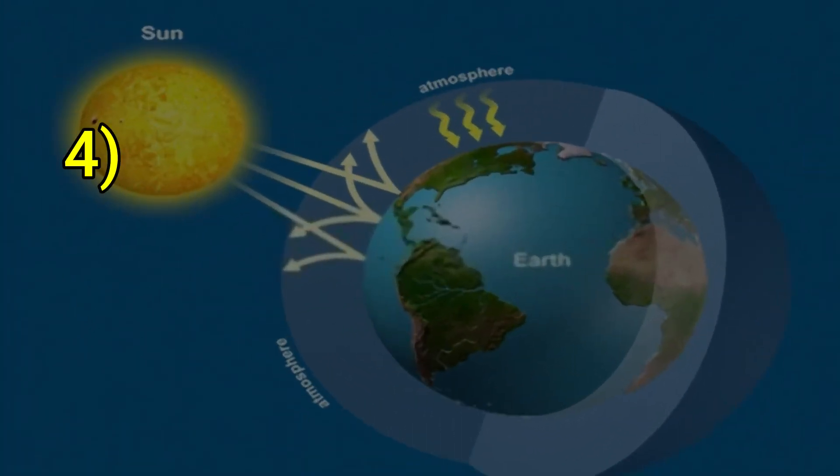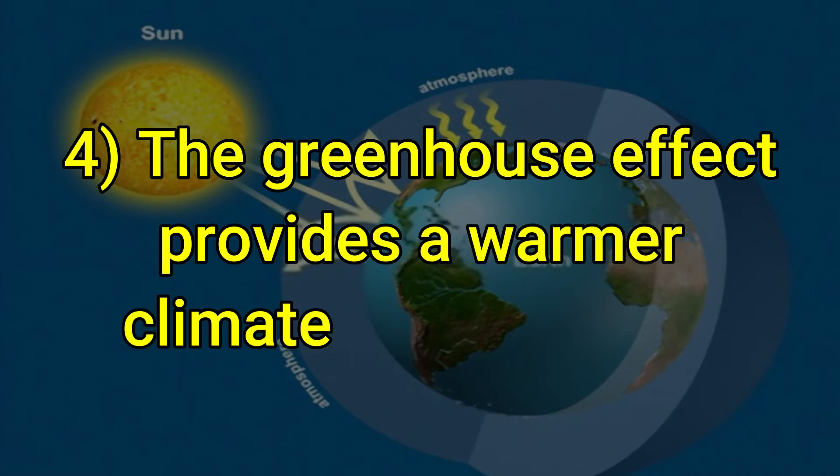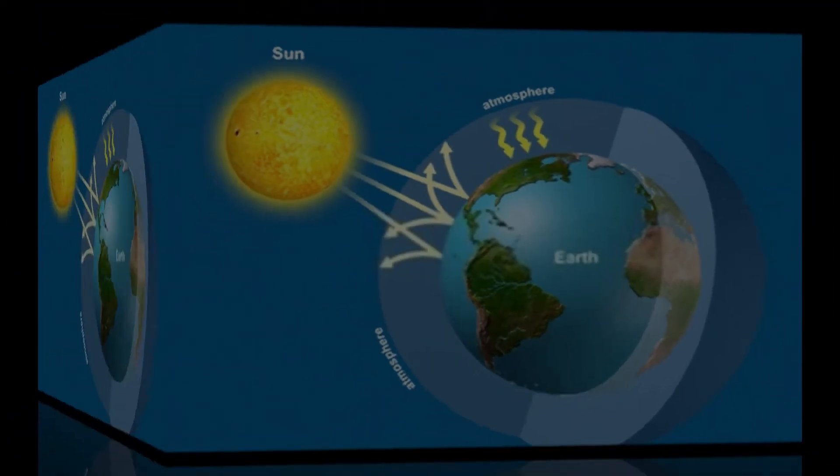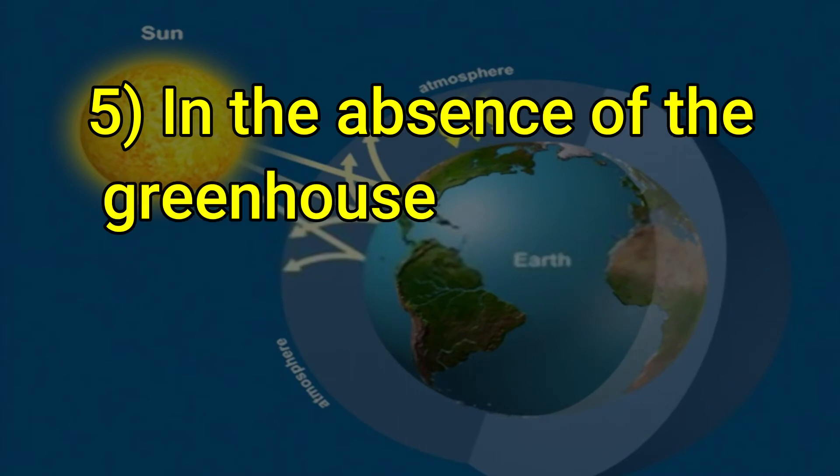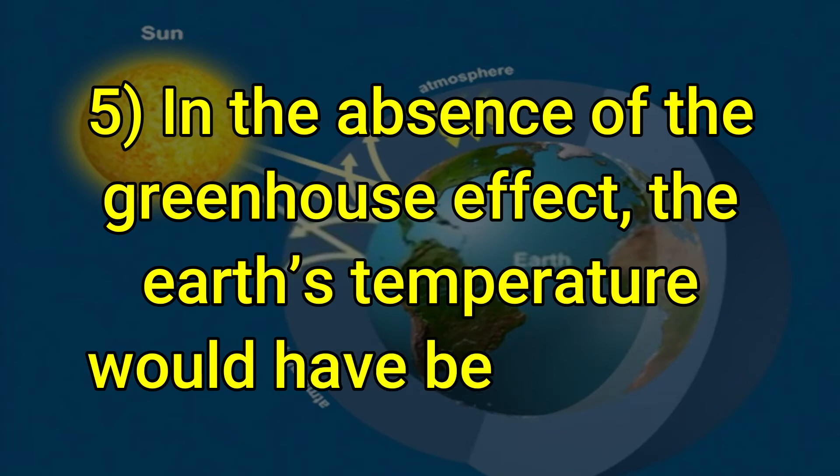The greenhouse effect provides a warmer climate to the plants. In the absence of the greenhouse effect, the earth's temperature would have been minus 18 degrees centigrade.